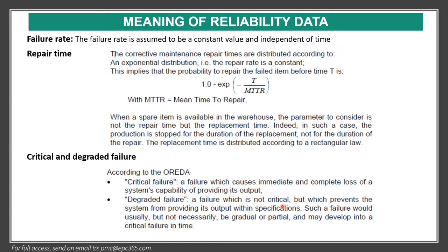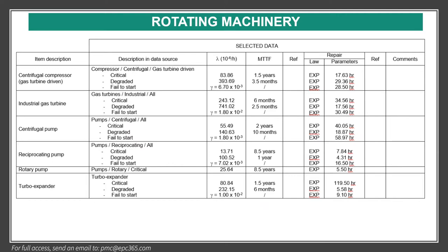Critical failure is a failure which causes immediate or imminent loss of the system's capability of providing its output. Degraded failure is a failure which is not critical but which prevents the system from providing its output within specification. A table should be in the report. For example, for a centrifugal compressor, we write the item description, and data descriptions — critical, degraded, fail to start. The symbol λ is the failure rate, with MTTF — mean time to failure — such as one and a half years, along with references.